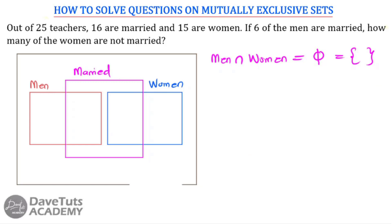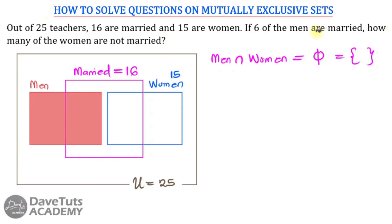The total number of teachers is 25. We have it that 16 are married, so we denote married as 16. Then 15 are women. Now, six of the men are married — so those men who are married will be in the shaded region in red, giving us six.